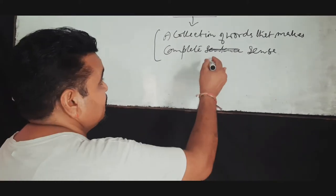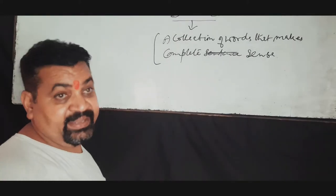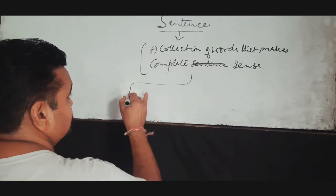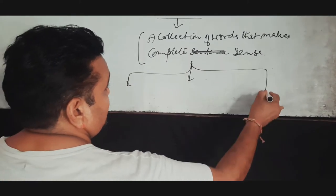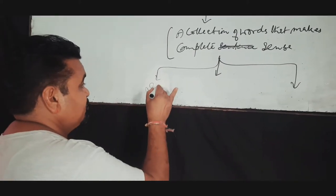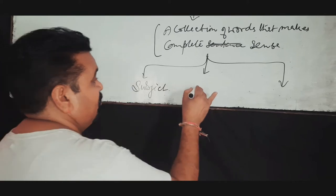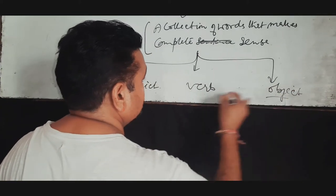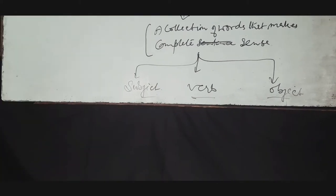Now there are parts of sentence. There are three parts of sentence: subject, verb, and object. These are the main parts of sentence.